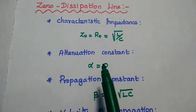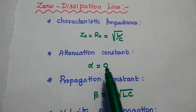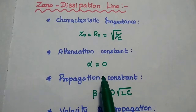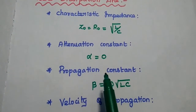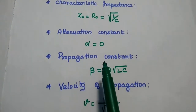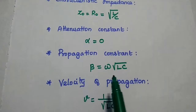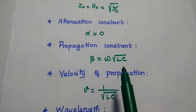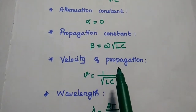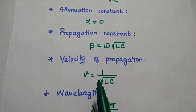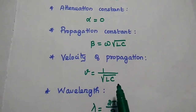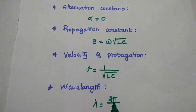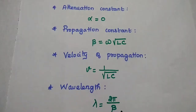The attenuation constant for a zero dissipation line is 0 — there is no attenuation. The propagation constant beta is equal to omega into the square root of LC. The velocity of propagation V is equal to 1 by the square root of LC.